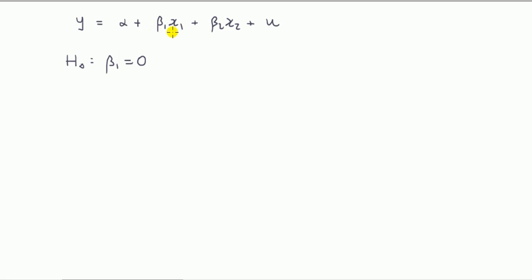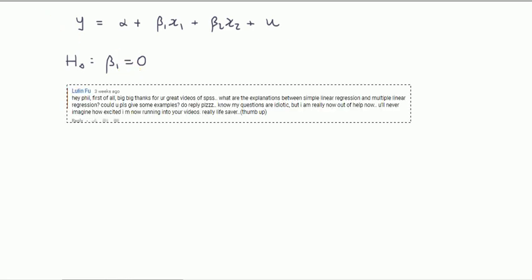Now let's do interpretation for the multiple linear regression model. Let's take two explanatory variables. There is a slight difference to the interpretation in this case when one of the slope parameters is zero. And if you're listening, Yulin, this answers your question—just say I'm not ignoring you. You're asking me for an explanation between a simple linear regression model and a multiple linear regression model. Well, here's one difference I'm going to explain.